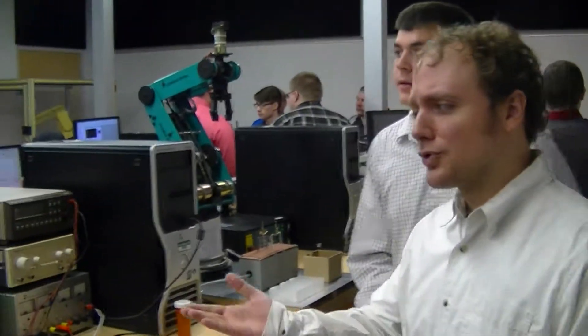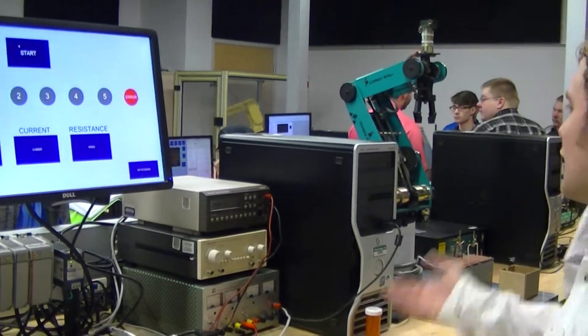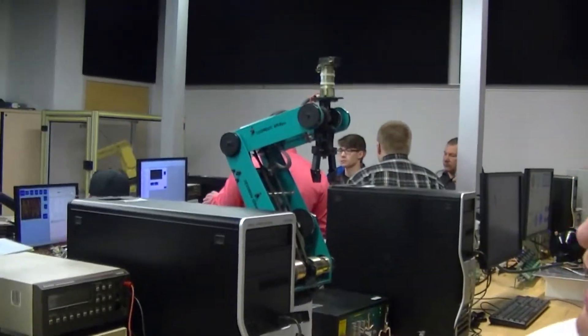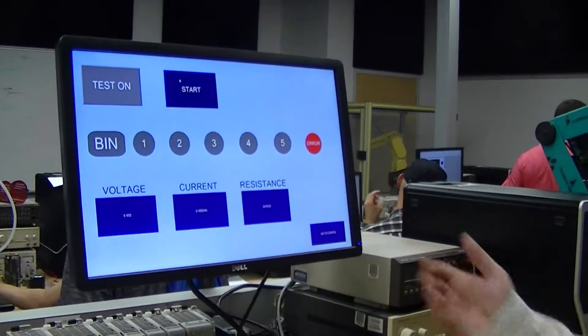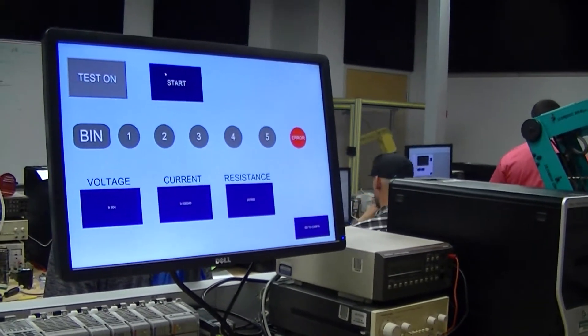What we're doing is we're taking our PLC and hooking it up to a robot. And then what we have up here is a human-machine interface, our HMI screen, to be able to easily explain what's going on.